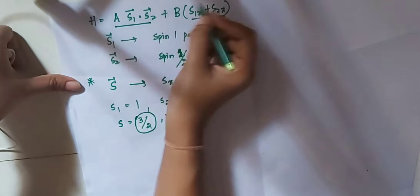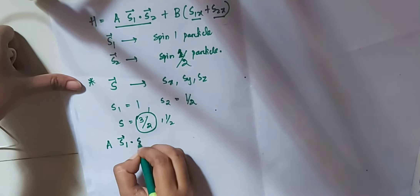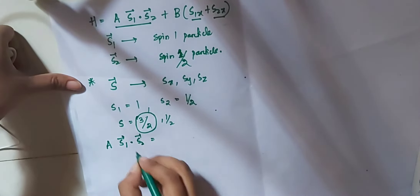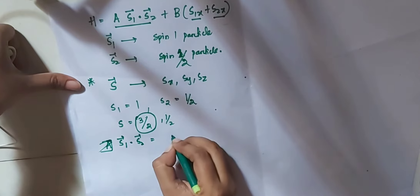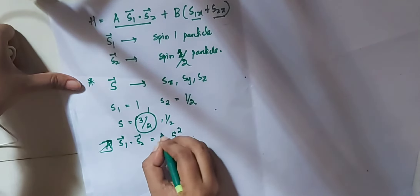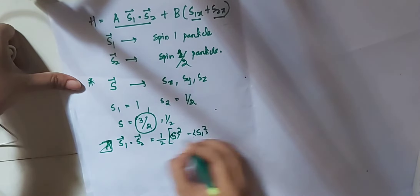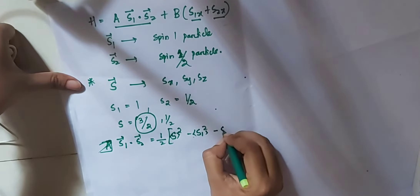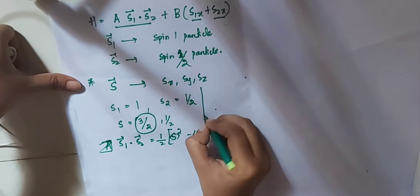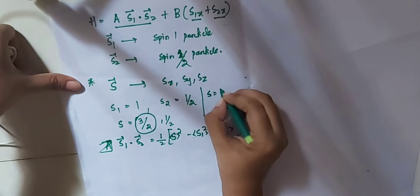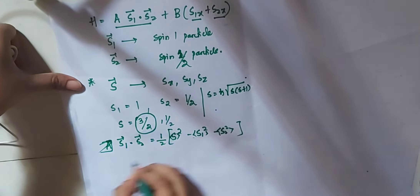We solve this part by part. The first part is a(S1·S2). We know that S1·S2 = (1/2)(S² - S1² - S2²). And S has magnitude ħ√(s(s+1)), similarly for S1 and S2.